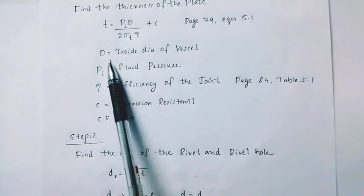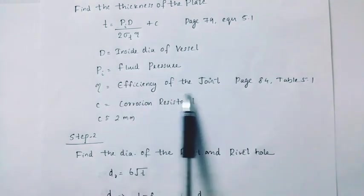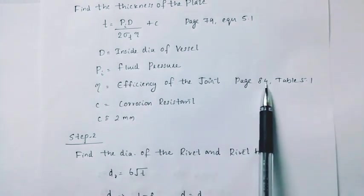Then D, inside diameter of the vessel. Pi is equal to fluid pressure. Eta is equal to efficiency of the joint, page number 84, table 5.1.